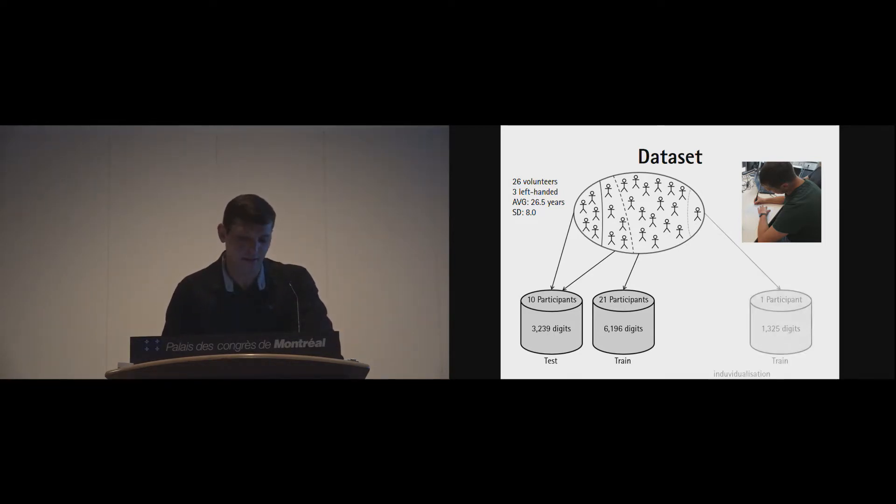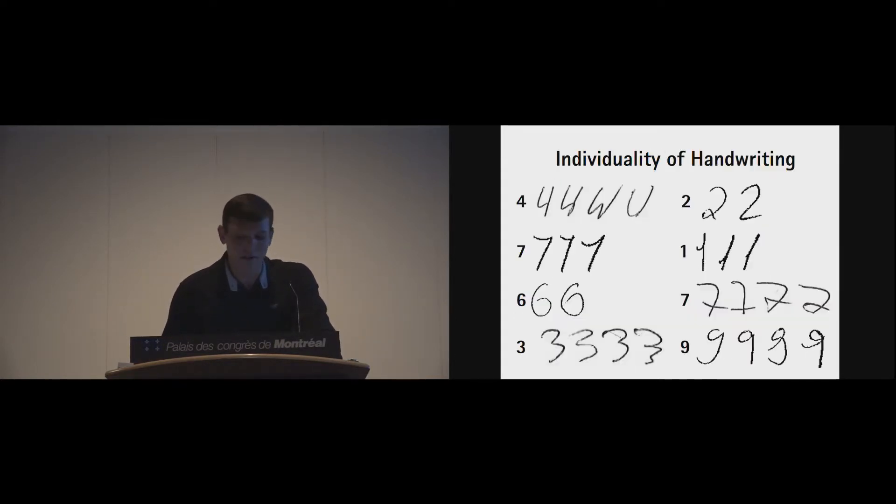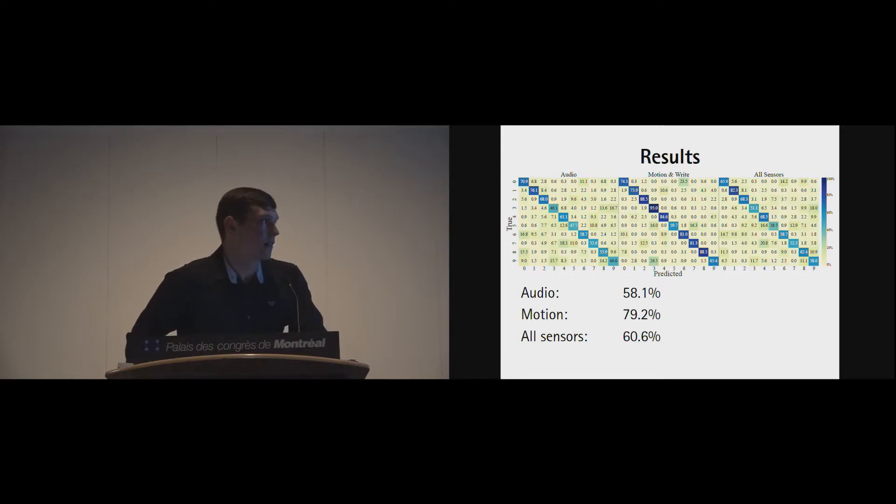We also wanted to see if we can individualize classifiers for one participant. One participant gave us about 2,200 samples. We looked at our handwritings and saw that handwriting can be really challenging, even for digits. A 4 can be written as a W or a U by a single person. Some symbols are very similar to other digits, as we see with the 6, which could also be a 0. This is why accuracies on all users are not that high. What was interesting is that if we apply all sensors in one neural network, the accuracies do not increase. This is because audio is a very noisy sensor.